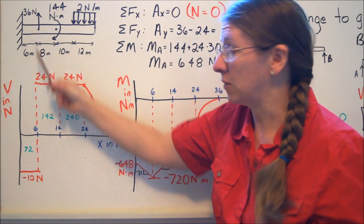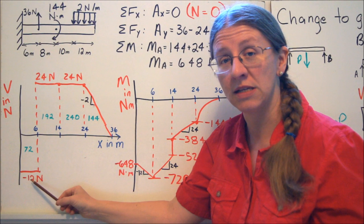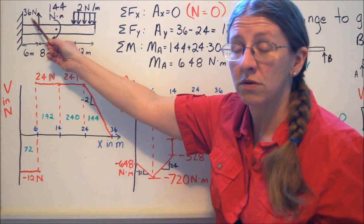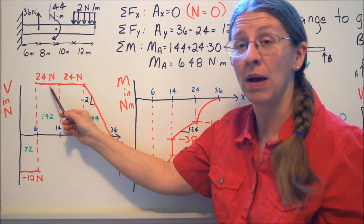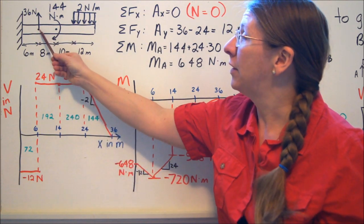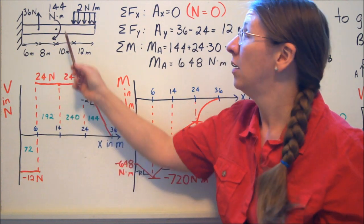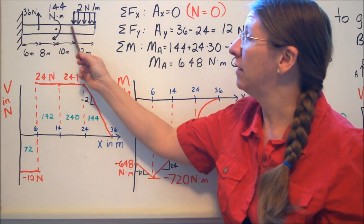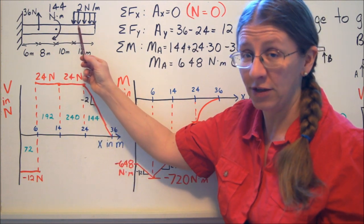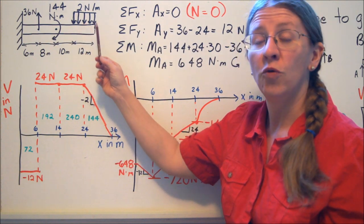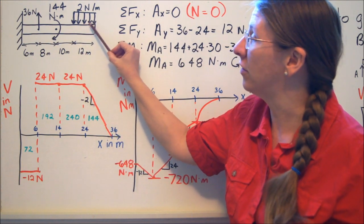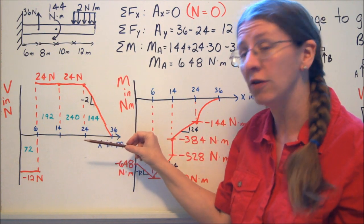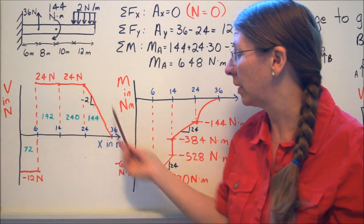Now we're going to simply march along this beam as we go. Between X equals zero and X equals six, nothing changes. So nothing changes, V stays constant. At X equals six, I get a point jump of 36 newtons. If I was at negative 12 and I jumped by 36, I'm now at positive 24. So here's my positive 24. Between here and here, nothing changes, V is constant. The point moment does not affect my V diagram, so nothing changes. Between 14 and 24, right here, nothing changes, so V is constant. Now I have this distributed load. V is going to change by the area under this load intensity diagram. That area is 2 times 12, so this is going to go from 24 to a value 24 lower than that. Well, 24 minus 24 is zero, so I'm going to come back to zero.